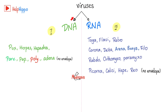Viruses are divided into DNA viruses and RNA viruses. The DNA viruses include: Pox, Herpes, Hepadna, Parvo, Papilloma, Polyoma, Adeno. The first group has an envelope; the second group has no envelope. Any other virus family is an RNA virus, such as Togavirus, Flavivirus, Retrovirus, Coronavirus, Deltavirus, Arenavirus, Bunyavirus, Filovirus, Rhabdovirus, Orthomyxovirus, Paramyxovirus, Picornavirus, Calicivirus, Hepatitis E, and Reovirus. The last group has no envelope; everything before it has an envelope.